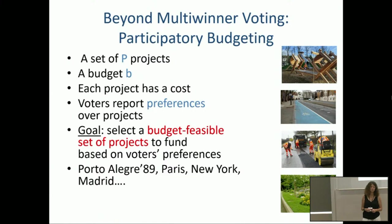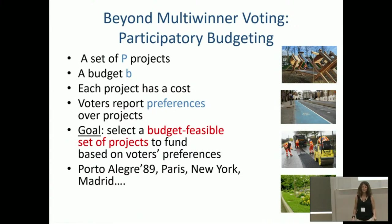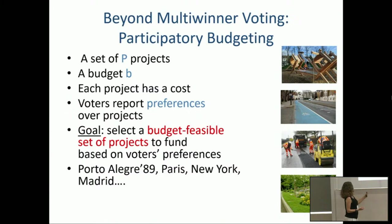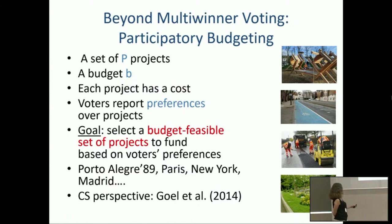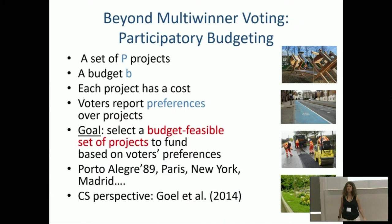Proportional participatory budgeting actually happens around the world — in Brazil, the United States, France, Spain — where a significant chunk of the budget is allocated using participatory budgeting. A shout-out to Ashish Goel, who brought the attention of our community to this problem. I think Ashish was the first to look at the problem from the computer science perspective, with his first paper around 2014. He focused more on preference elicitation and practical aspects, but he should get credit for focusing the community's attention on this problem.